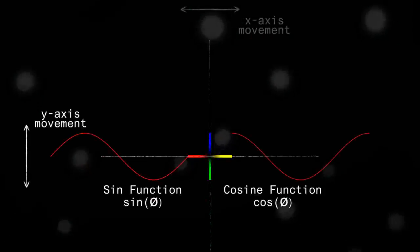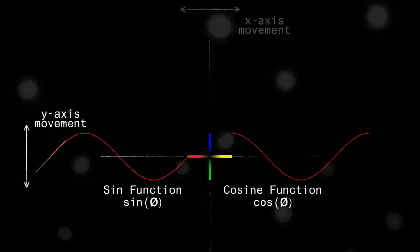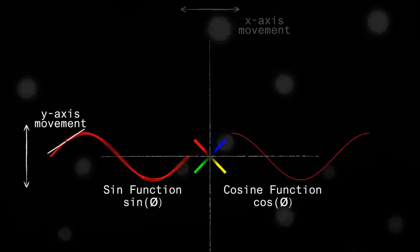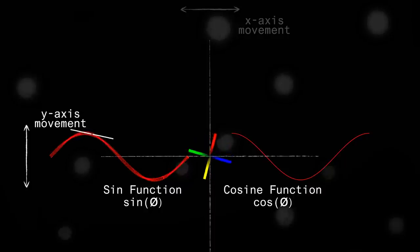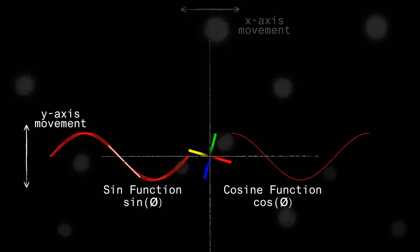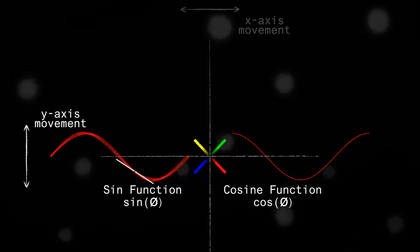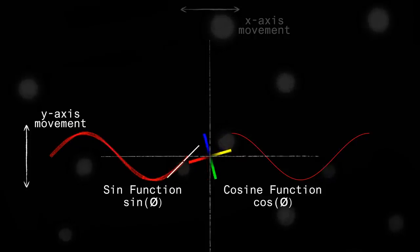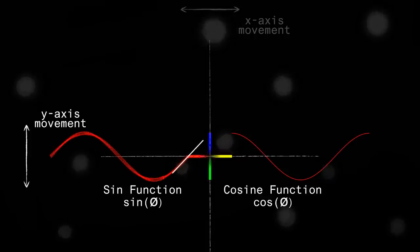The tangent line to the sine function starts out with a steep slope, which means that the y position of the tip of the blade is changing rapidly. The closer the tangent line is to the apex of the sine function, the shallower the slope. This makes sense because the vertical position of the tip of the blade changes very rapidly when the blade is nearly horizontal, and very slowly when the blade is nearly vertical.